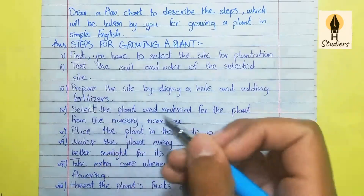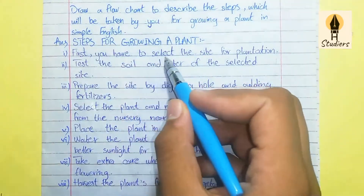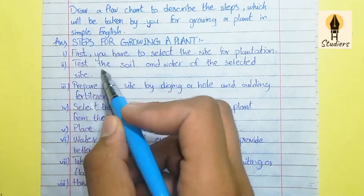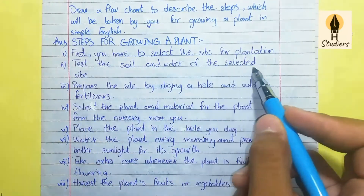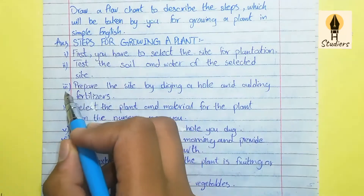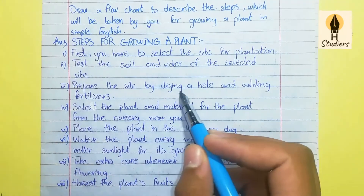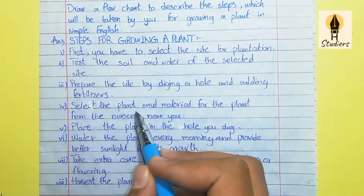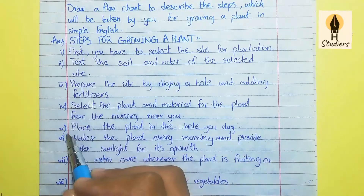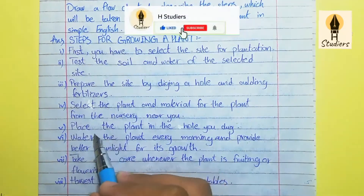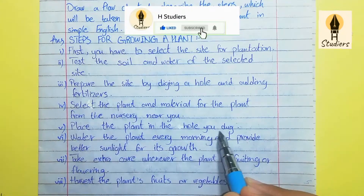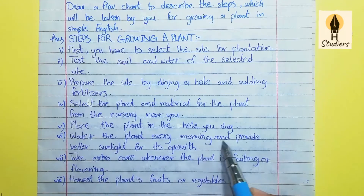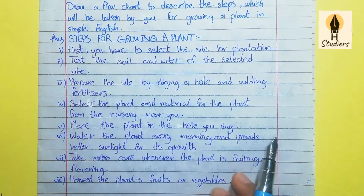These are the steps of growing a plant. Point 1: Select the site for the plantation. Point 2: Test the soil and water of the selected site. Point 3: Prepare the site by digging a hole and adding fertilizers. Point 4: Select the plant and material for the plant. Point 5: Place the plant in the hole you dug. Point 6: Water the plant every morning and provide better sunlight for its growth.